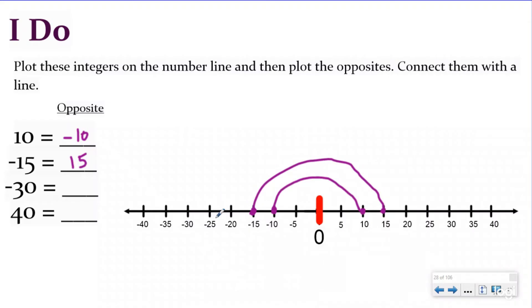Then we have negative 30 and our opposite for negative 30 would be positive 30. So I'm going to plot that one right there. And we're going to connect with a line and our symmetry might not look as good the farther we get because I'm not an artist, but I'll do my best. And then we have positive 40, which is going to be to the right of zero. And then the negative 40 would make it an opposite. So that's going to be negative 40 to the left of zero. And we're going to connect those with a line.